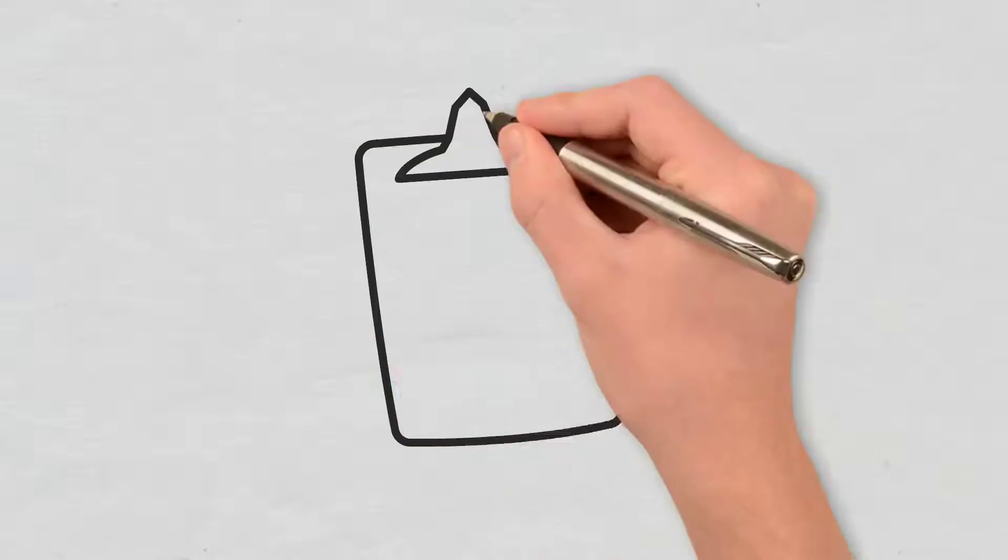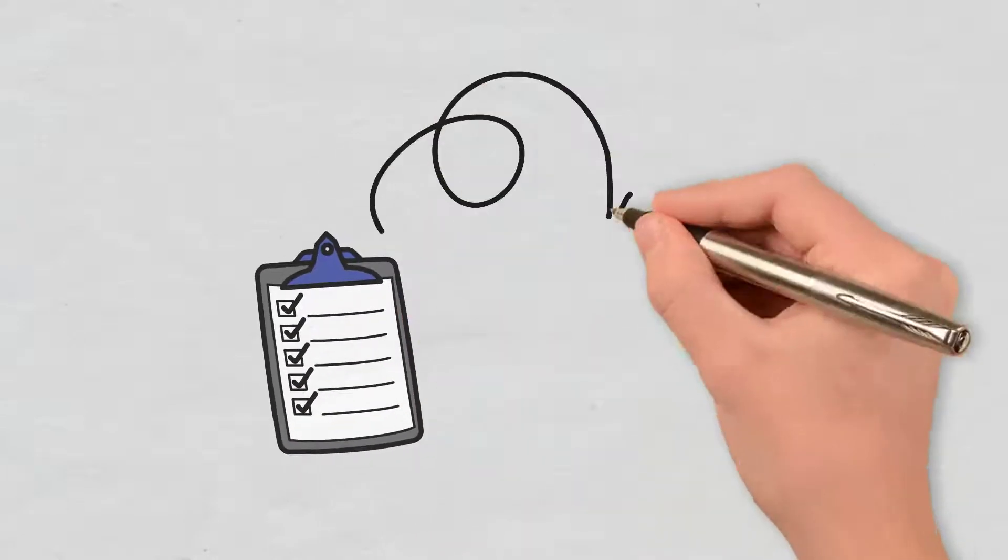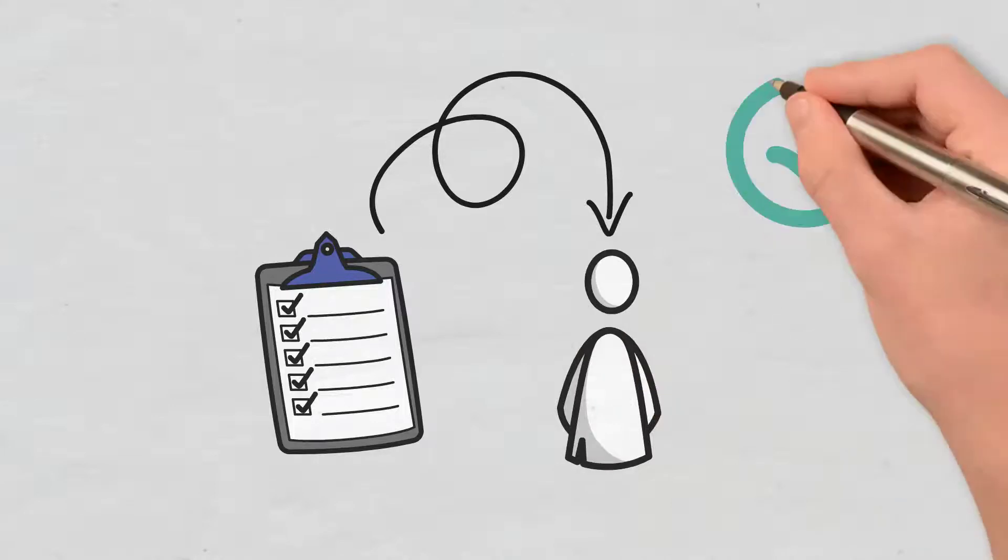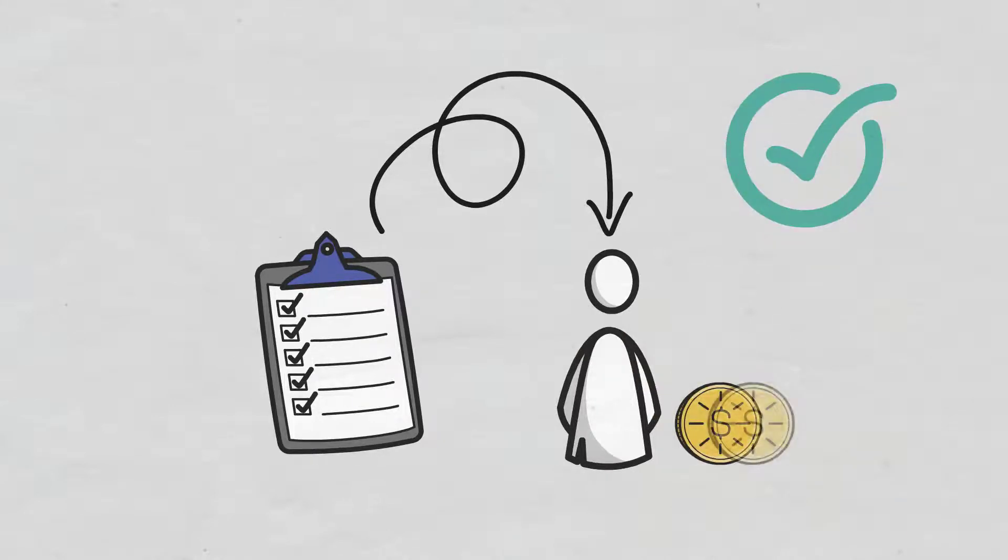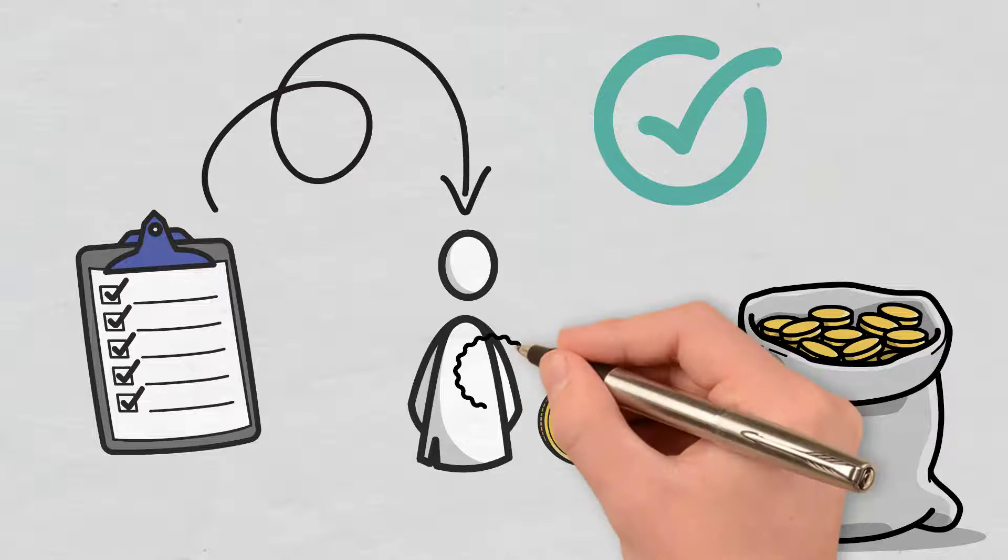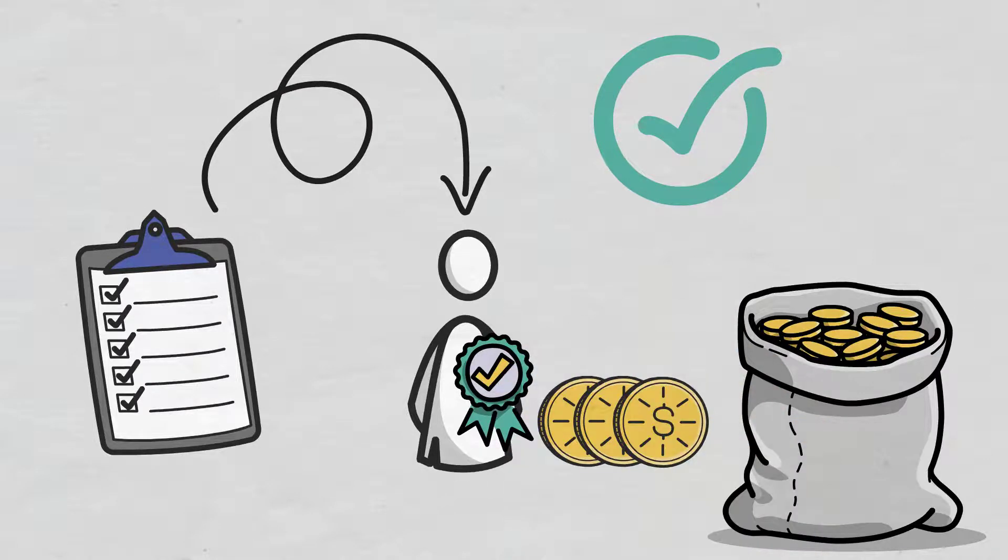What is proof-of-stake? The proof-of-stake consensus mechanism refers to a person or entity from the network who is allowed to validate block transactions based on how many coins they currently own. Basically, the more coins you own, the more authority you have as a validator.